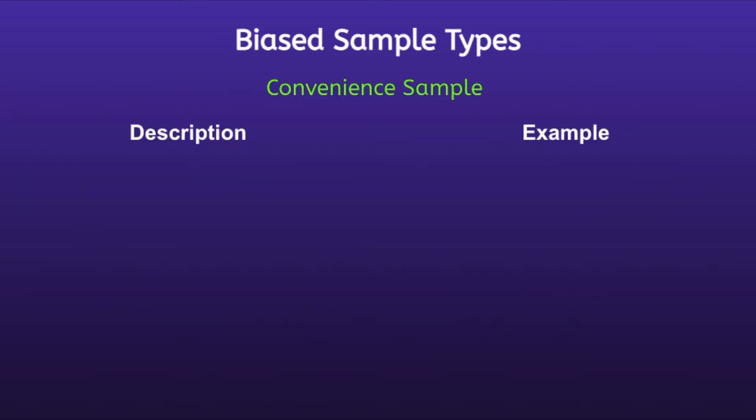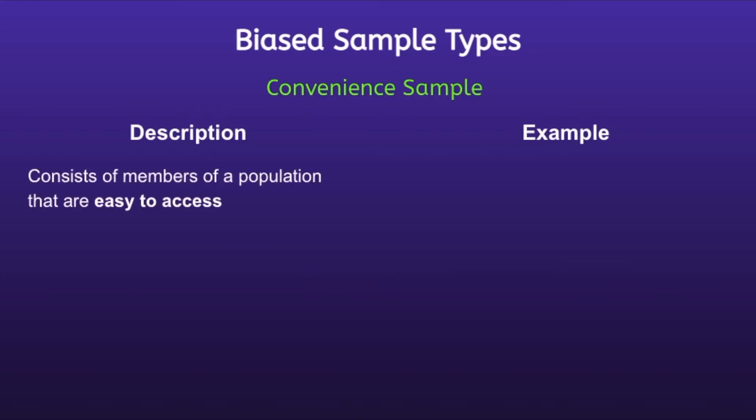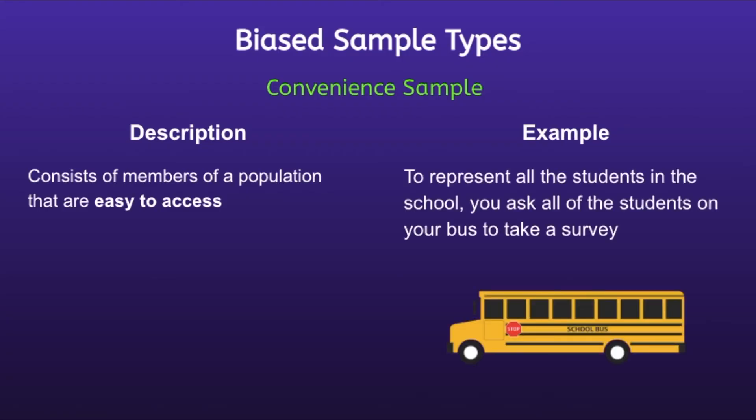Biased sample types. Convenience sample: a convenience sample consists of members of a population that are easy to access. For example, to represent all the students in the school, you ask all of the students on your bus to take a survey. This would be a convenience sample because you are riding the bus anyway, and those students on the bus are easy to access.